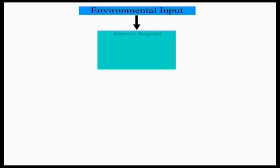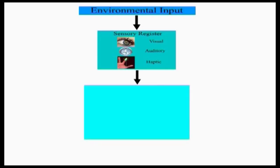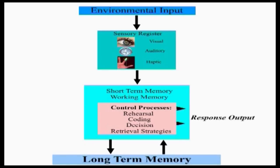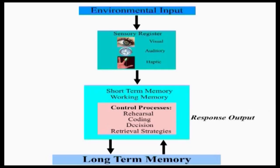Now that we have discussed the model by Atkinson and Shiffrin, the model by Craik and Lockhart revised with Tulving, and the neural network perspective — if we combine all this information and try to evolve a comprehensive model of memory, our sensory register mostly gets information from the visual, auditory, and haptic senses. The rehearsed information moves to short-term memory; those encoded and rehearsed further move to long-term memory. Depending on our decision to respond to the environment, we use retrieval strategies to get the desired information from long-term storage, and the response outputs are mediated by our working memory.